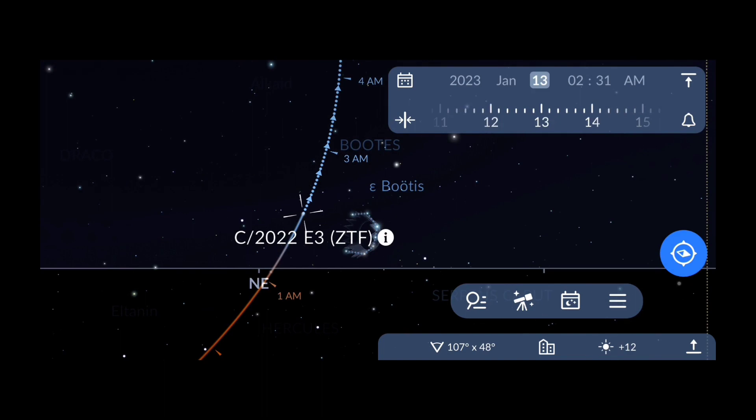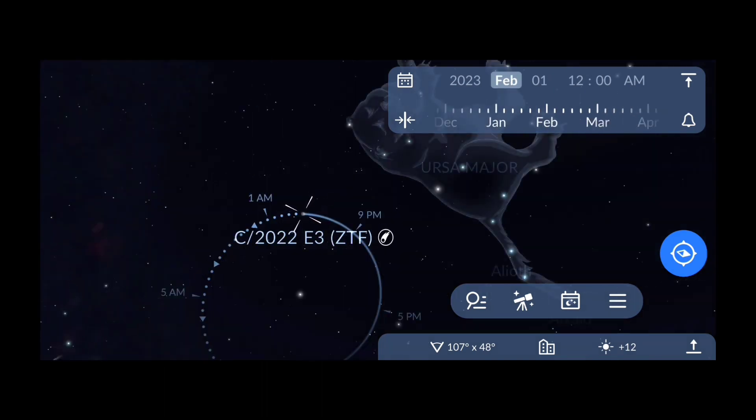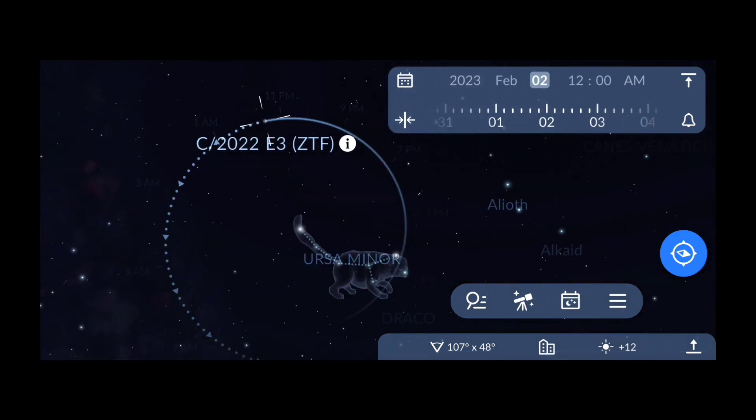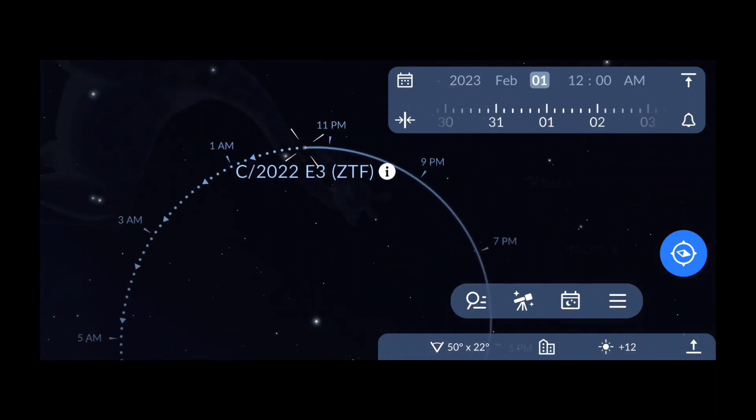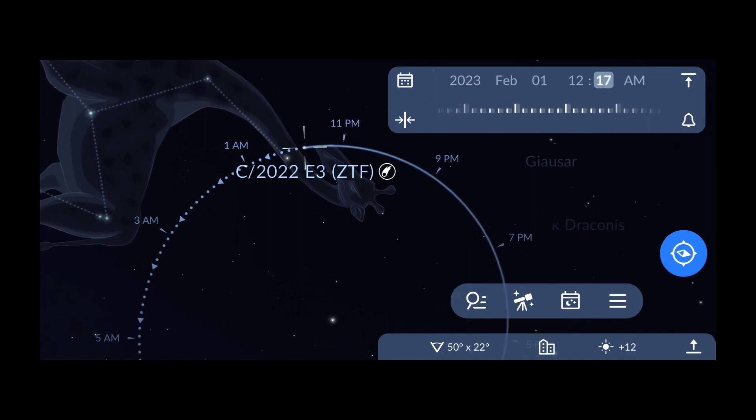So this is how you can search the location of the comet for February 1st and observe it in the sky. Hope this video will be helpful to you in finding the accurate location of the comet in the night sky. Do share the video if you liked it and subscribe the channel for more updates on it.